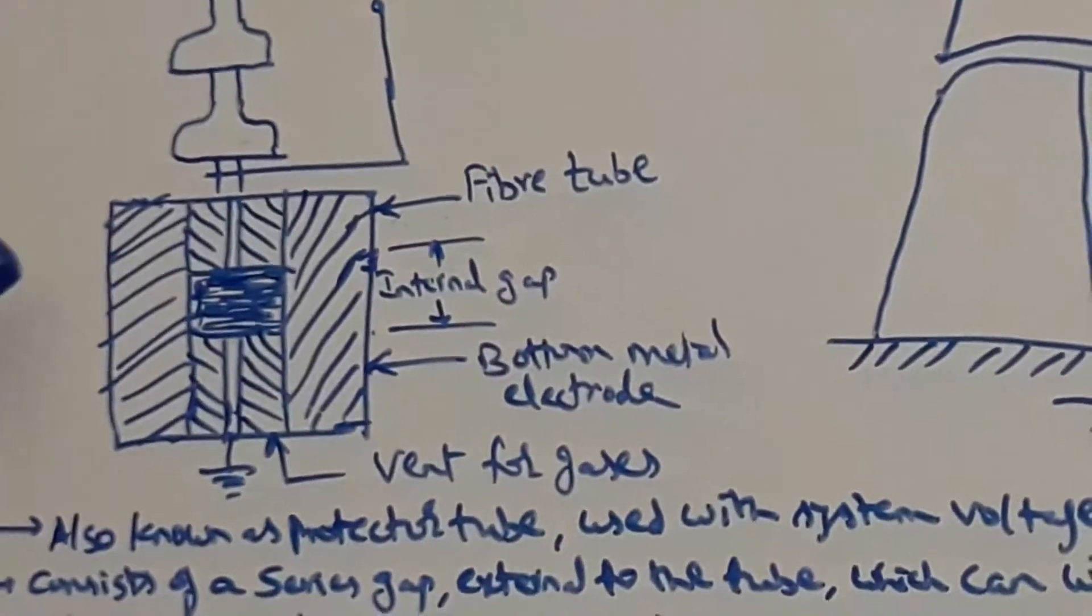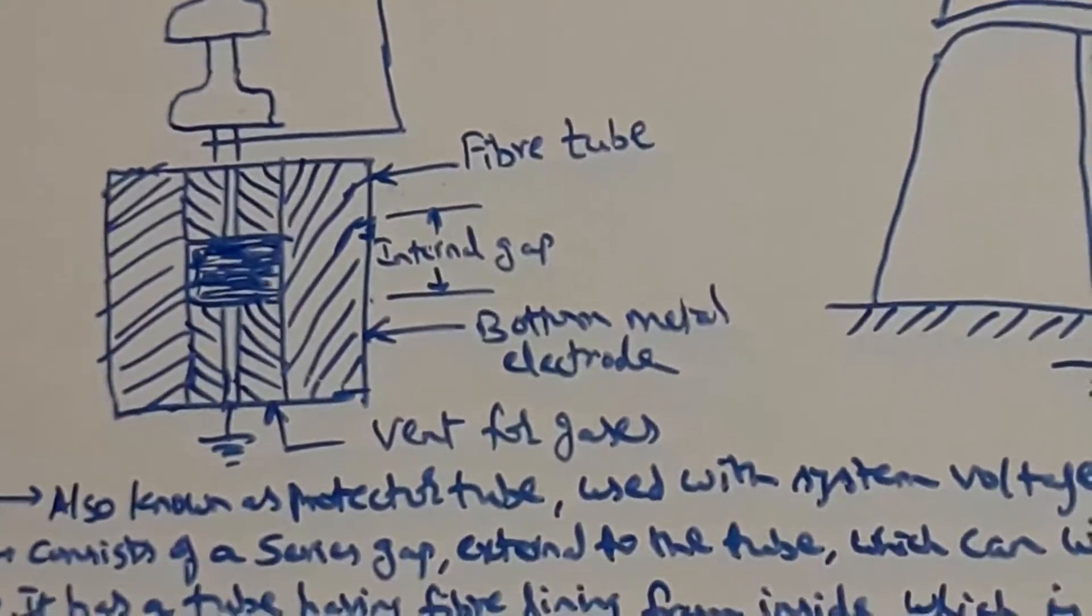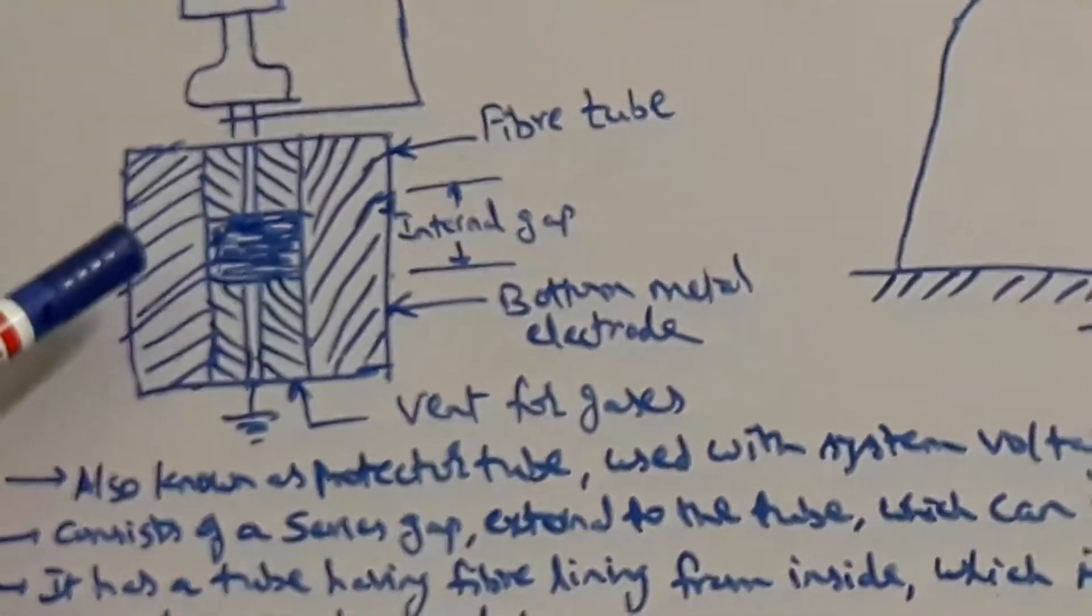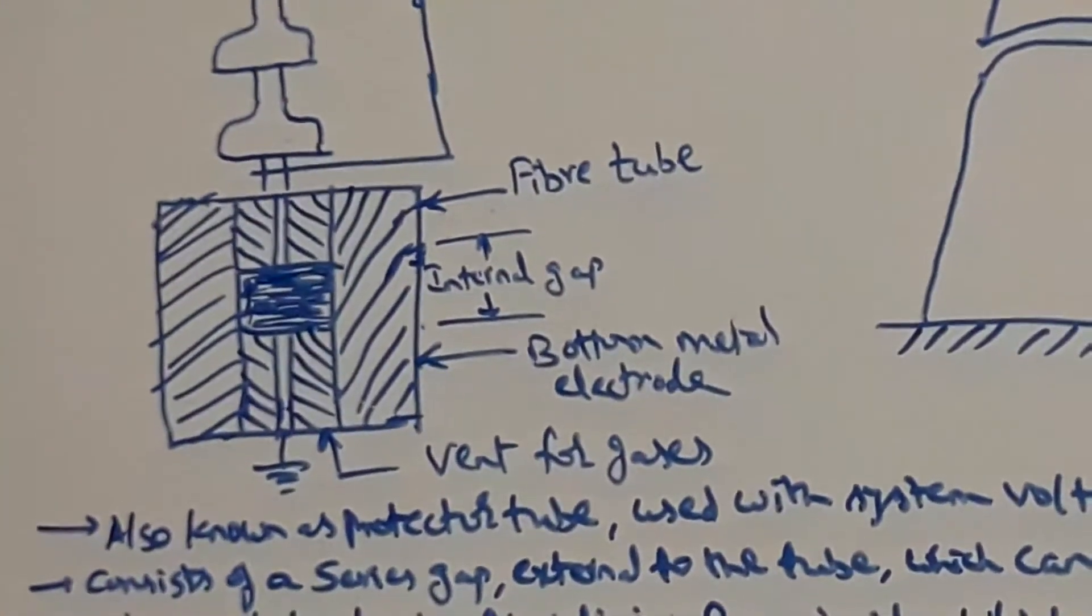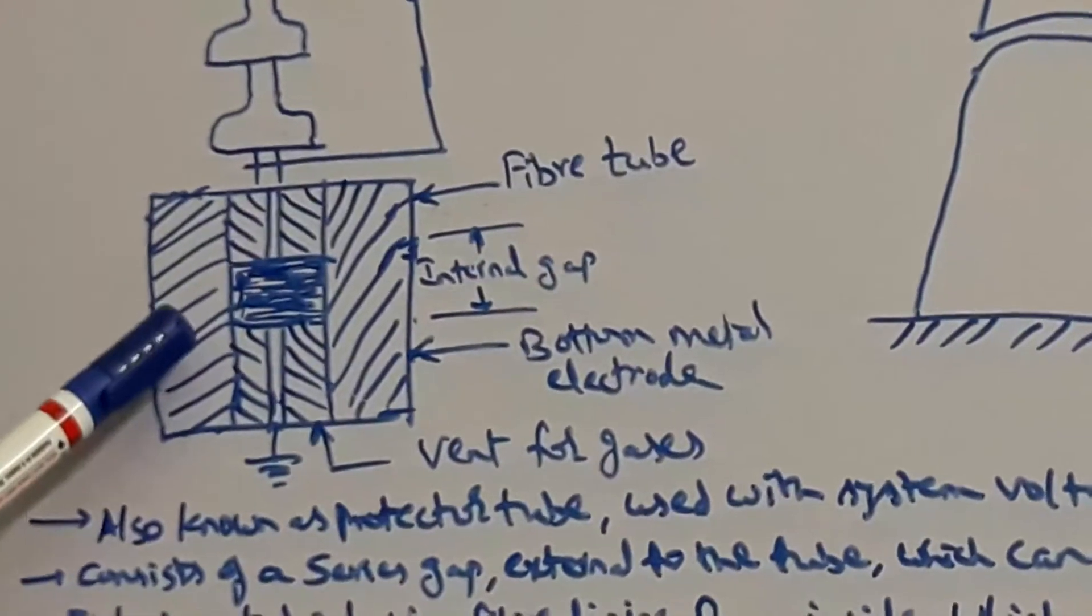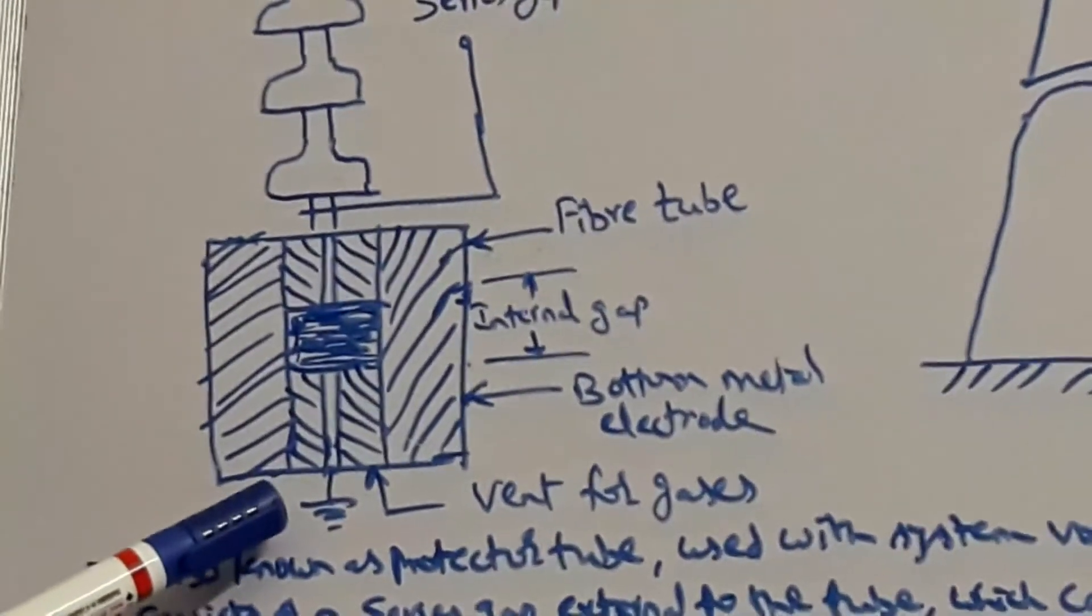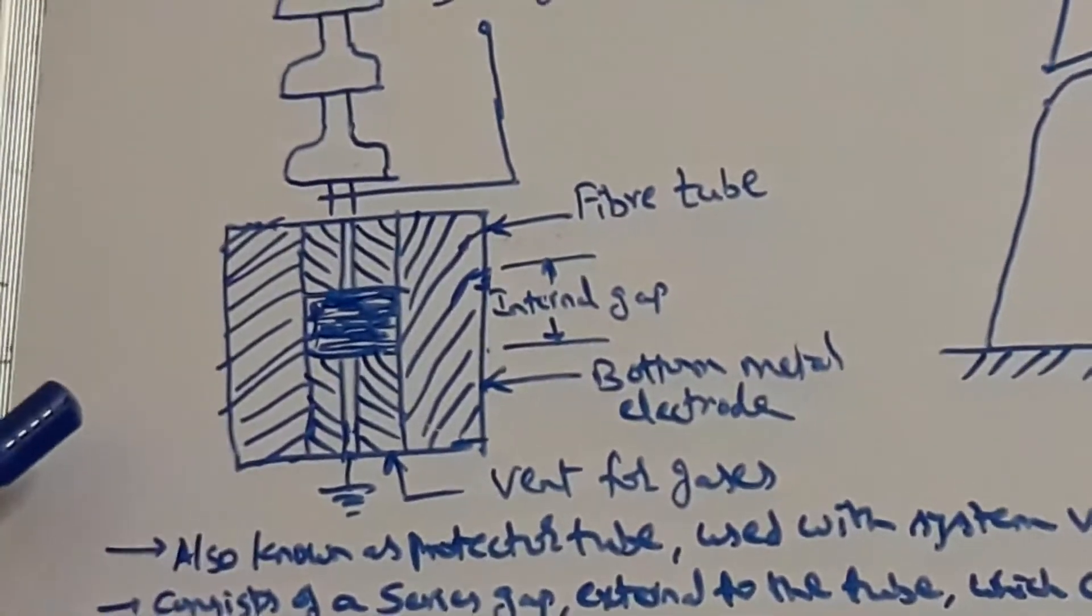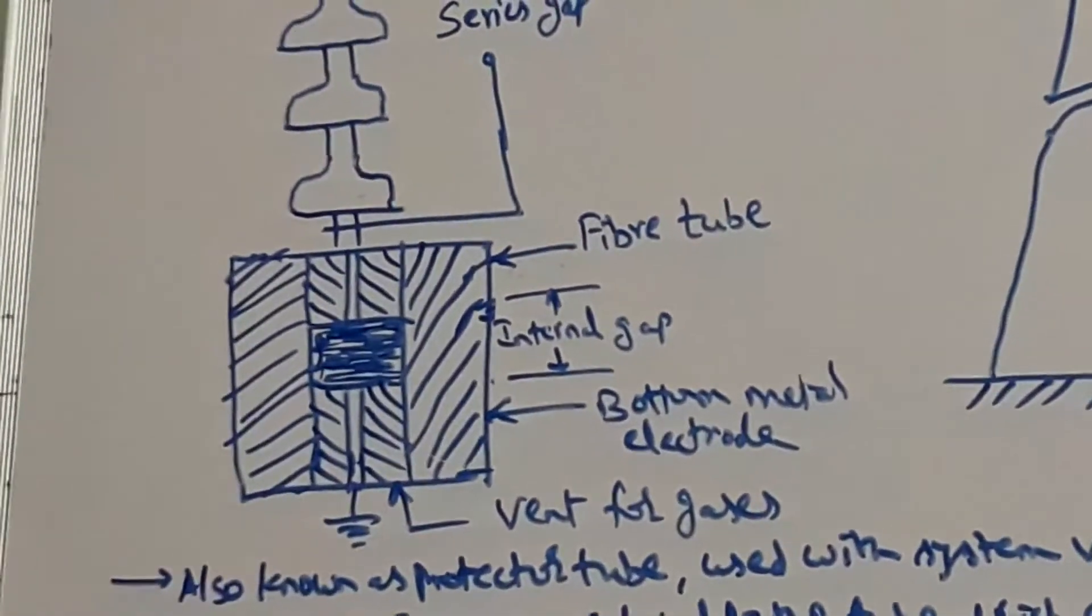The arc vaporizes some of the organic material in the fiber tube, building up high pressure in a short time. This high-pressure gas is expelled out through the bottom vent shown in the figure, after producing turbulence in the internal gap of the tube.